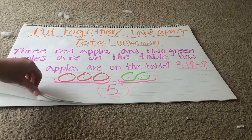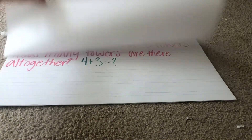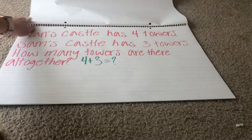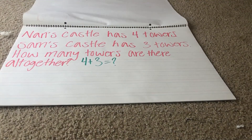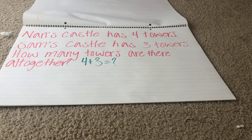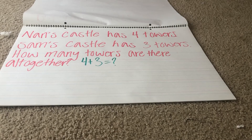Next we've got another example. Nan's castle has four towers. Sam's castle has three towers. How many towers are there all together? We've got four plus three equals question mark.